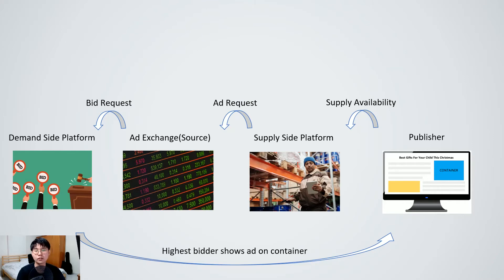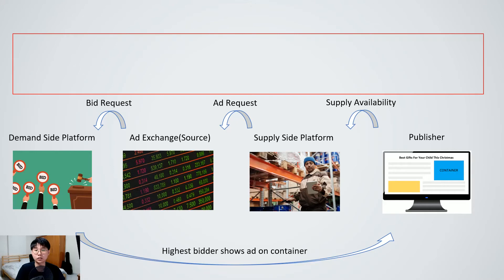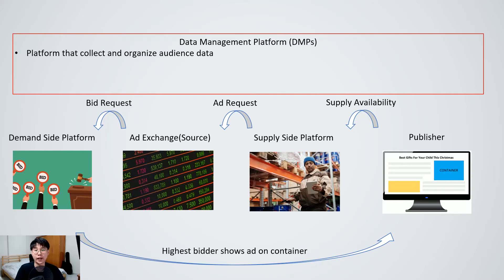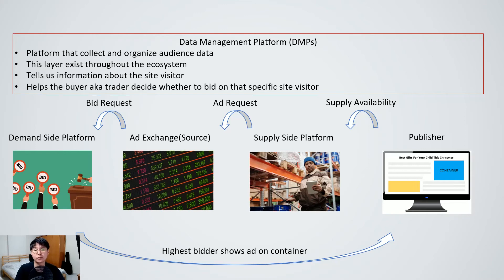Now we can take it a step further. On top of all this exists another layer called the data management platform, or DMP. This is a platform that collects and organizes audience data, and this layer exists throughout the ecosystem. It tells us information about the site visitor, which will then help the buyer or trader decide whether to bid on that specific site visitor.